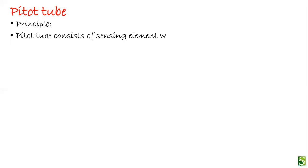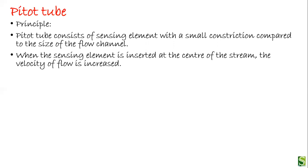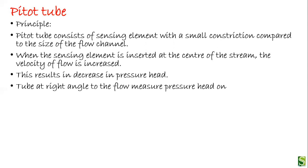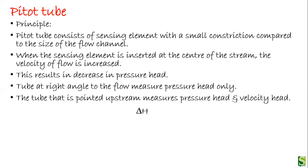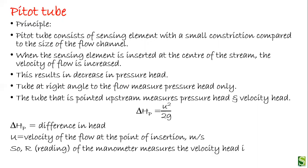Now we look at the pitot tube. Its principle: the pitot tube consists of a sensing element with a small constriction compared to the size of the flow channel. When the sensing element is inserted at the center of the stream, the velocity of the flow increases, resulting in a decrease in pressure head. The tube at right angles to the flow measures pressure head only, while the tube pointed upstream measures both pressure head and velocity head. The formula is: ΔHp = μ²/(2g), where ΔHp is the difference in head and μ is the velocity of flow at the point of insertion.